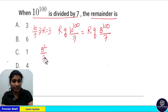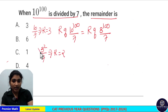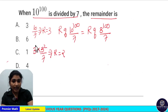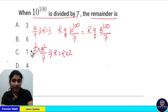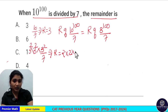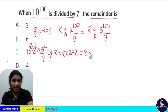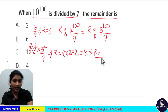3 squared divided by 7 means 9 divided by 7, which gives remainder 2. If you multiply by 3 squared again, every 3 squared in the numerator gives remainder 2. So multiplying again: remainder is 2 × 2 × 2, which equals 8. Then 8 divided by 7 gives remainder 1.